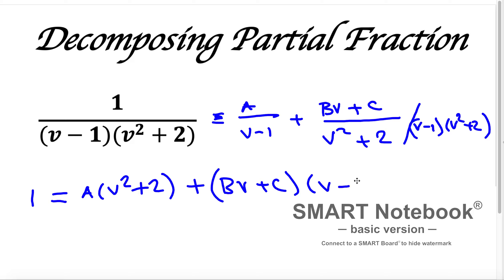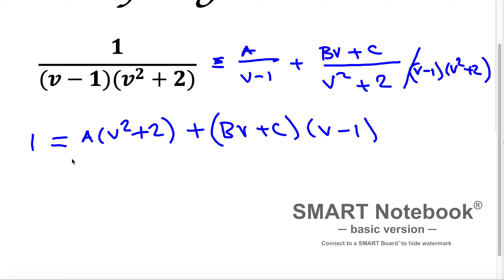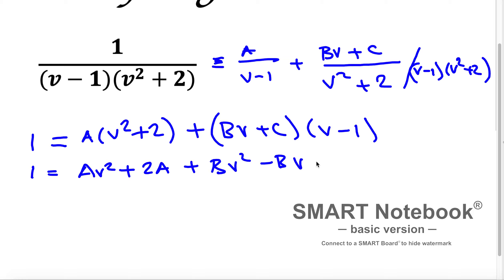After distributing, 1 equals A(v squared plus 2) expanded to Av squared plus 2A, plus Bv squared minus Bv, plus Cv minus C. Now grouping the v squared terms: on the left side there is no v squared, so it equals 0. Thus 0 equals Av squared plus Bv squared.